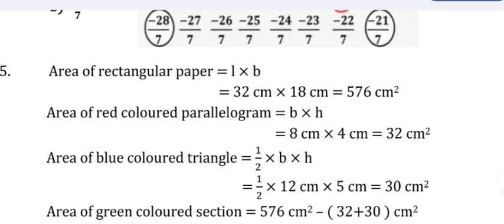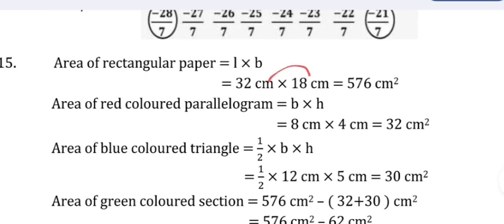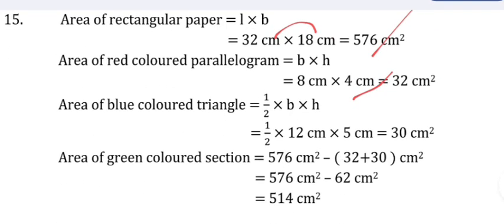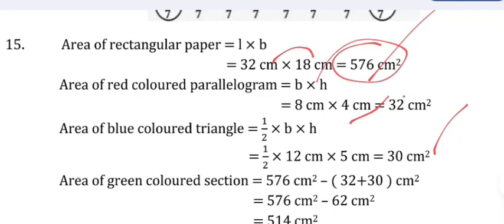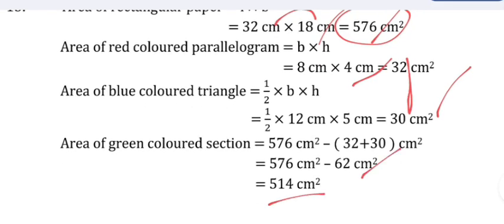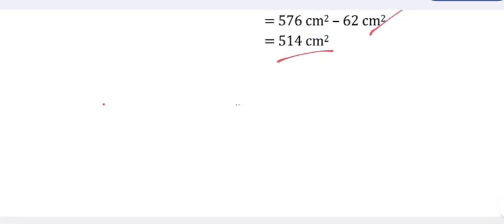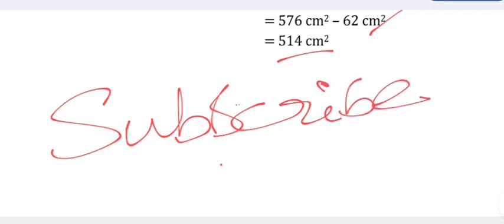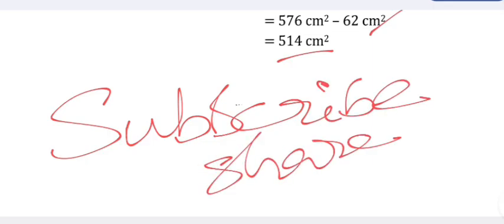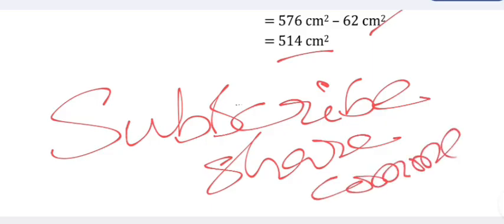Question 15 (Section D) solution: Area of rectangular paper = l × b = 32 × 18 = 576 centimeter square. Area of red parallelogram = b × h = 8 × 4 = 32 centimeter square. Area of blue triangle = half × base × height = half × 12 × 5 = 30 centimeter square. Area of green section = 576 − (32 + 30) = 576 − 62 = 514 centimeter square. If you like this video, please subscribe, like, share, and comment. Thank you for watching.